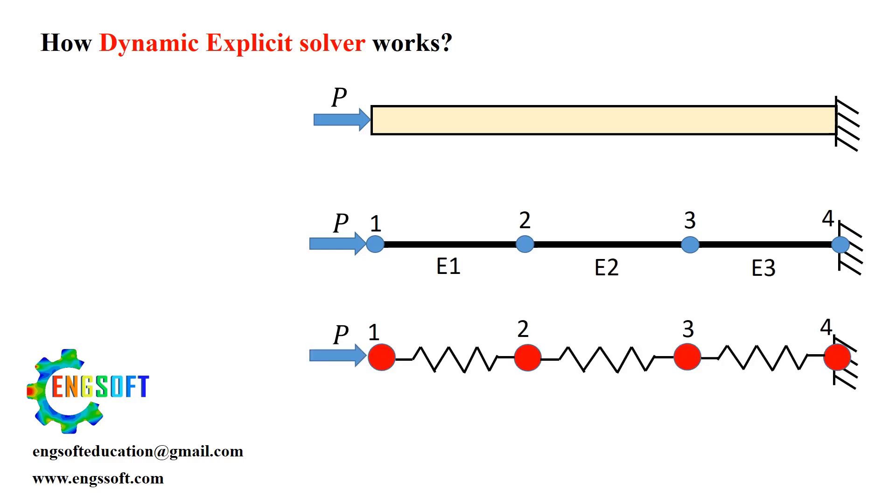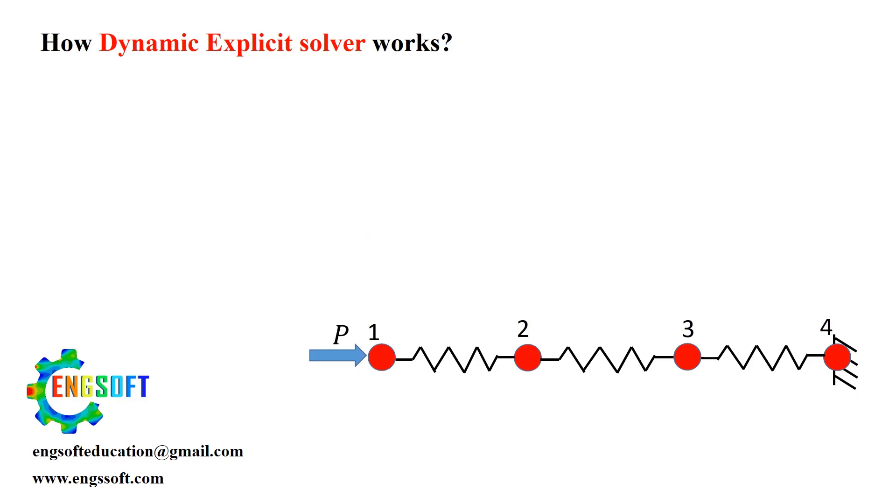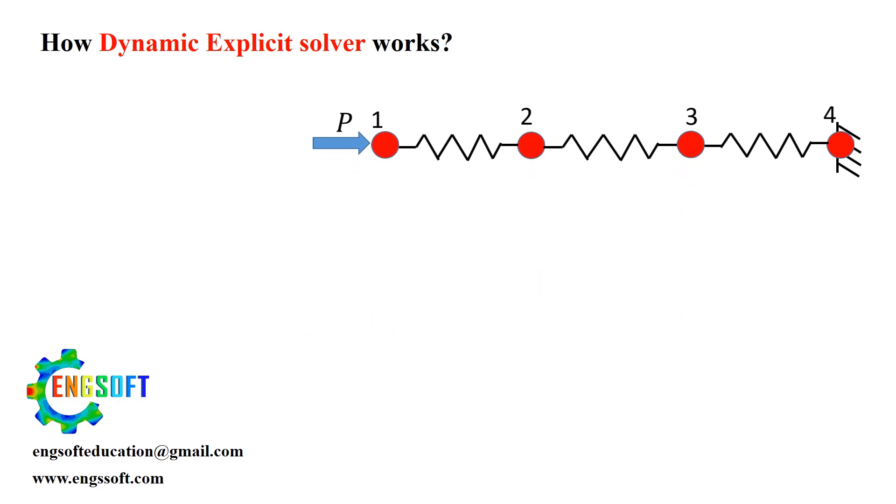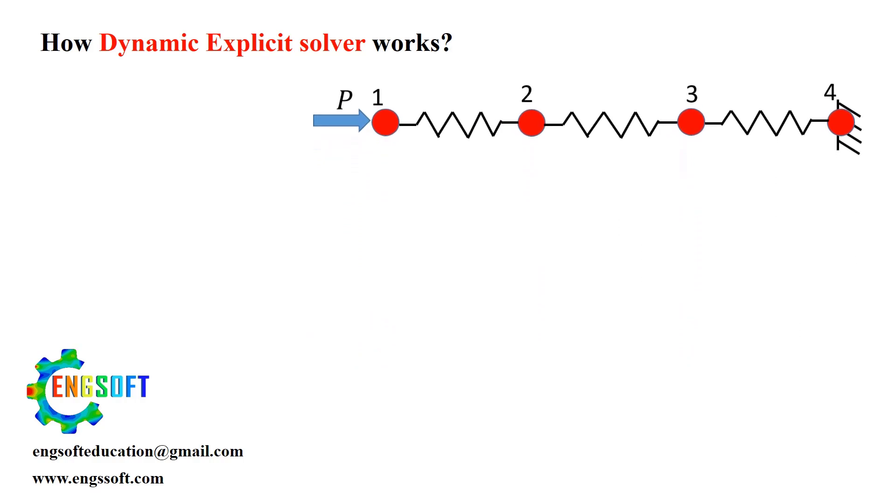In explicit methods, the mass of each element is concentrated at the nodes, which simplifies things, because it turns the mass matrix into a diagonal matrix. Imagine the mass sitting on each node, and between these masses, we have springs representing the stiffness of the elements.